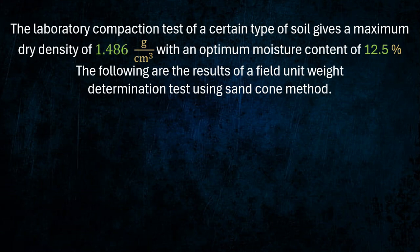The laboratory compaction test of a certain type of soil gives a maximum dry density of 1.486 grams per cubic centimeter, with an optimum moisture content of 12.5 percent.